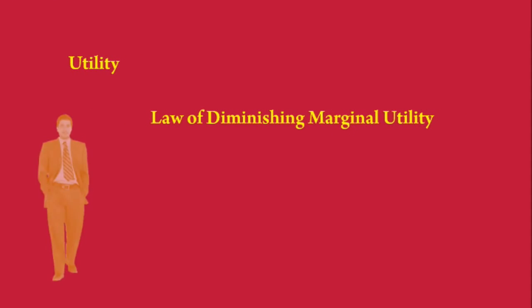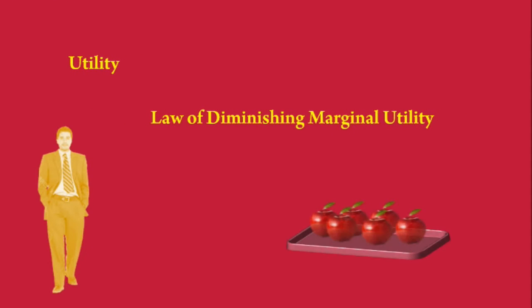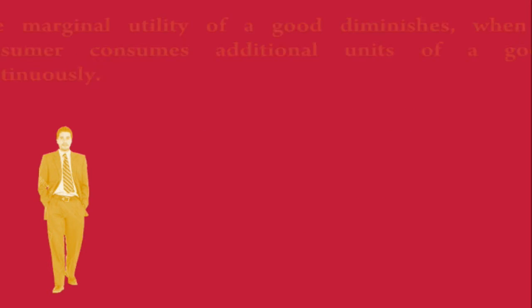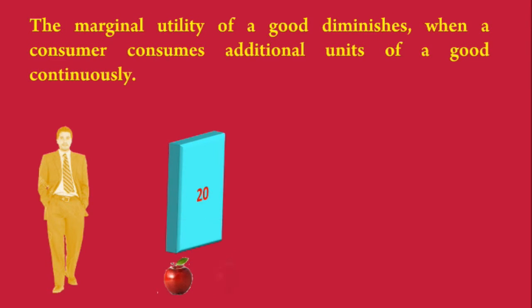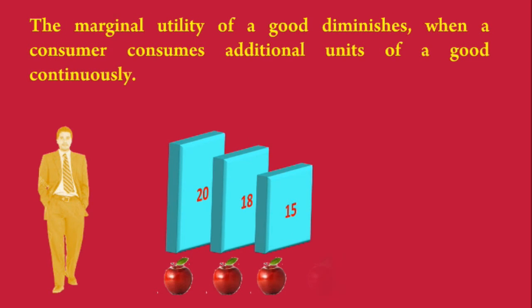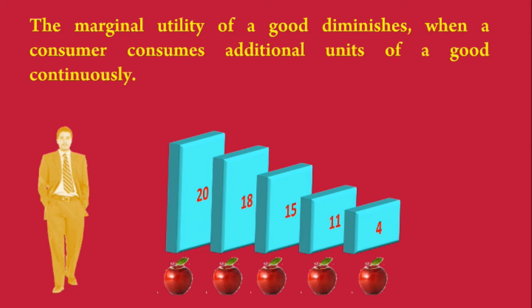Using the concept of Utility, the Law of Diminishing Marginal Utility describes a consumer's attitude towards consumption of a good. The law says the marginal utility of a good diminishes when a consumer consumes additional units of the good continuously.